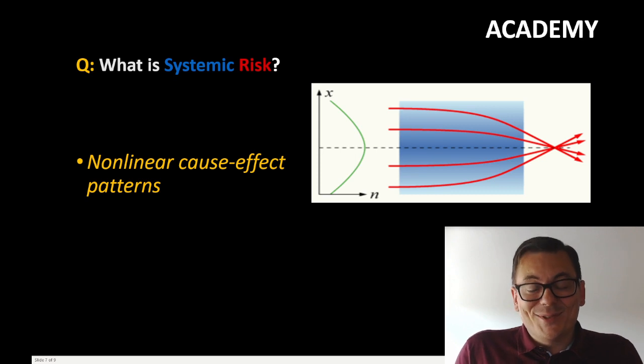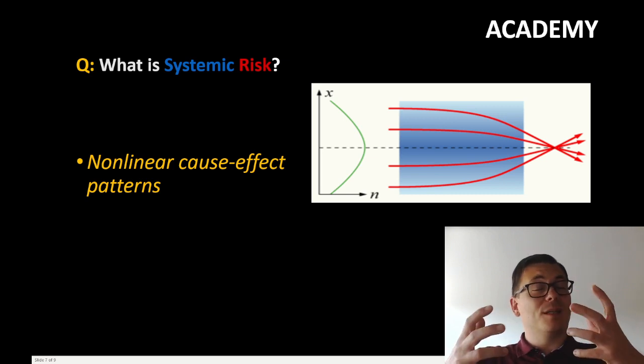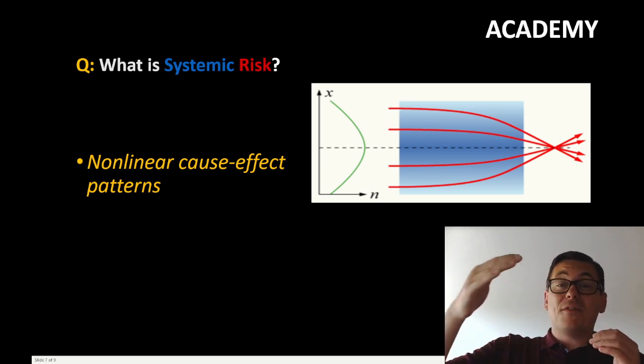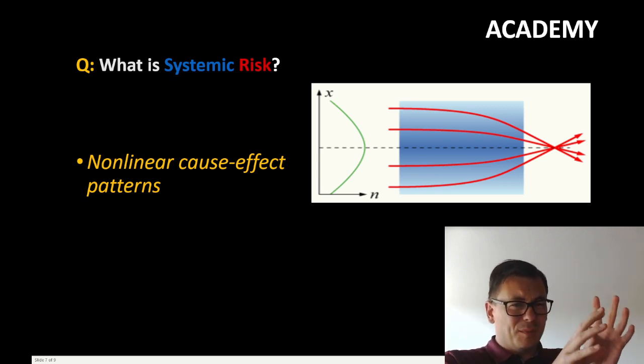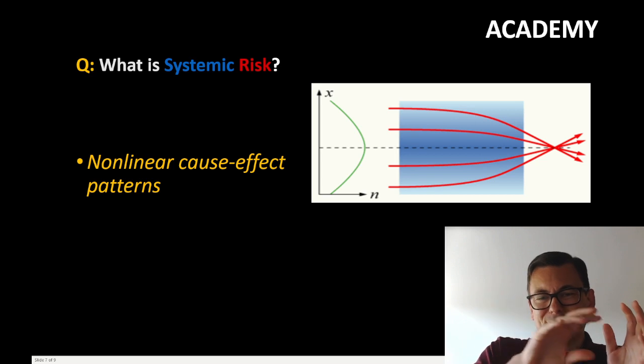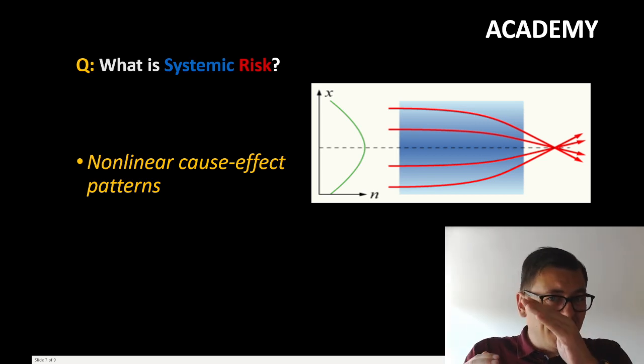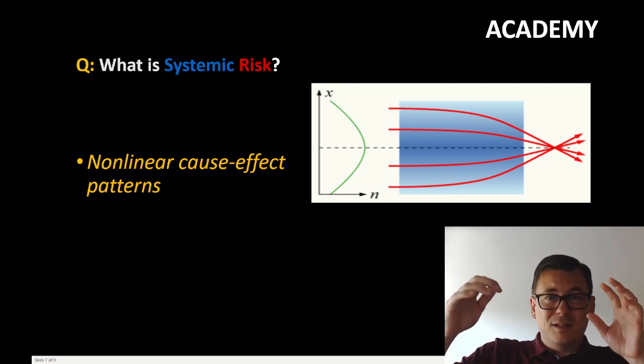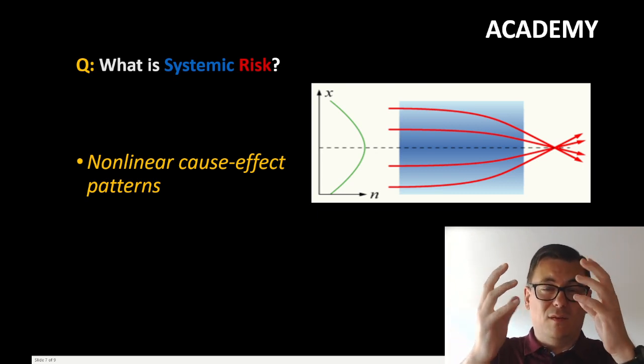Very closely related to this also is the last element, the non-linear cause-effect patterns. When we have systemic risk, we cannot always say... Sometimes in the aftermath we can say, well, the waves started over here, but there were also some here, and they had a kind of a cause leading to the effect. But it's not a linear one because it is a multiplication of a lot of random effects that in our system accumulates to this systemic risk.